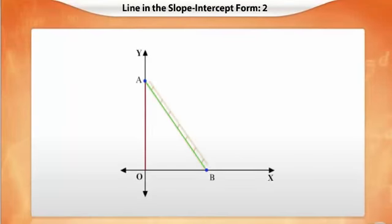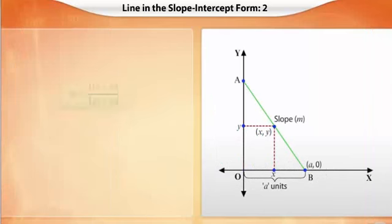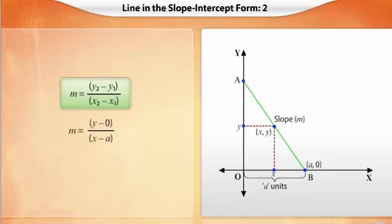Now suppose the height at which the ladder intersects the wall is unknown. However, it is given that the foot of the ladder is positioned at a distance of a units from the wall, with slope m. Let (x, y) be an arbitrary point on the line. The slope of a line is given by the ratio of (y2 minus y1) and (x2 minus x1), where (x1, y1) and (x2, y2) are two points on the line. By substituting and solving, we get y is equal to m multiplied by (x minus a). This equation is the slope-intercept form of the line when the x-intercept and the slope are known.